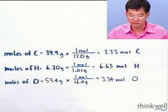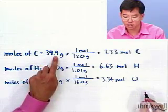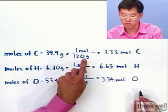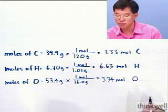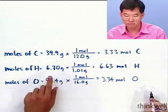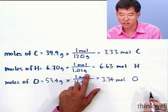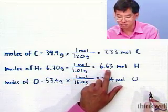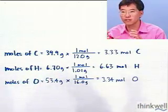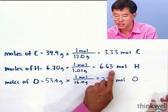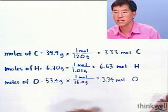Working this out: the mass of carbon, 39.9 grams, times one mole over 12.0 grams (the molar mass of carbon), gives us 3.33 moles of carbon. Similarly for hydrogen, the molar mass is 1.01 grams per mole, so 6.70 grams represents 6.63 moles of hydrogen. Finally, the oxygen in our 100-gram sample gives us 3.34 moles of oxygen.